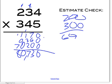So based on our estimate check, did we solve that problem correctly? It's approximately close — relatively speaking, it's close. Yeah, excellent job, you guys. You have mastered 2-by-3 and 3-by-3 multiplication.